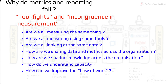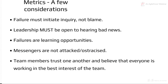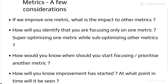Metrics fail when we collect them, present them, and no action happens — or there's a semblance of action and then enthusiasm dies down and tools get disbanded. For metrics to work, a failure must initiate inquiry, not blame. Leadership must be open to hearing bad news. Failures are learning opportunities. Messengers are not attacked. Team members trust one another. Key questions to answer: if you improve one metric, how will it impact others? How do you avoid over-optimizing one metric while sub-optimizing others? How will you know improvement has started? If you don't have answers to these, don't get into metrics tracking yet.